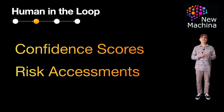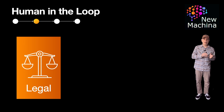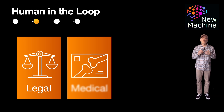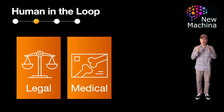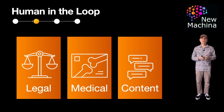So what are some example use cases? In legal tech, contract review agents flag risky clauses, but lawyers decide whether to accept or revise them. In healthcare, human-in-the-loop agentic systems can assist with reading x-rays, but radiologists must approve the diagnosis. Another highly common and critical use case is content moderation and review.